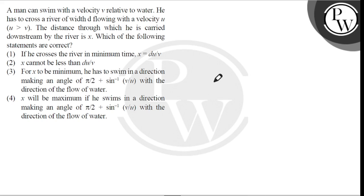Number three, for X to be minimum, he has to swim in a direction making an angle of pi by 2 plus sine inverse V by U with the direction of flow of water. And number four, X will be maximum if he swims in a direction making an angle of pi by 2 plus sine inverse V by U with the direction of flow of water.